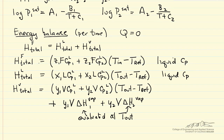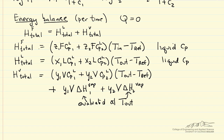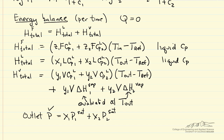The final piece we need is the outlet pressure, which is related to the saturation pressures and therefore to the outlet temperature. We typically set the outlet pressure, and then we calculate the flow rates leaving, the mole fractions leaving, and the outlet temperature by solving all these equations simultaneously.